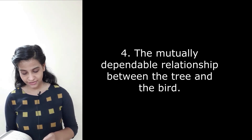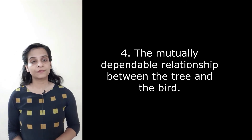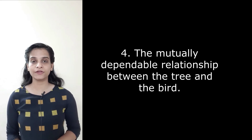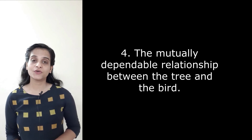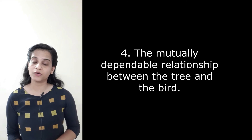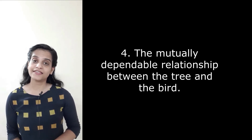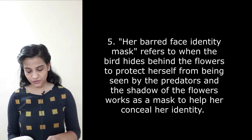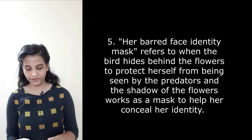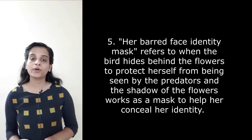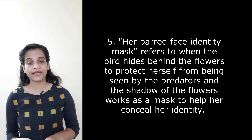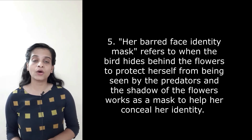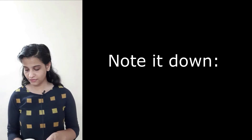Fourth question: What do you like most about the poem? Personally, the relationship between the laburnum tree and the goldfinch bird is most beautiful — it shows how dependent both were on each other, not just for survival but for the sense of joy they bring into each other's lives. Fifth question: What does the phrase 'her barred face identity mask' mean? The falling flowers, which looked like rods, acted as a face identity mask, covering and concealing the identity of the bird as it hid from predators.